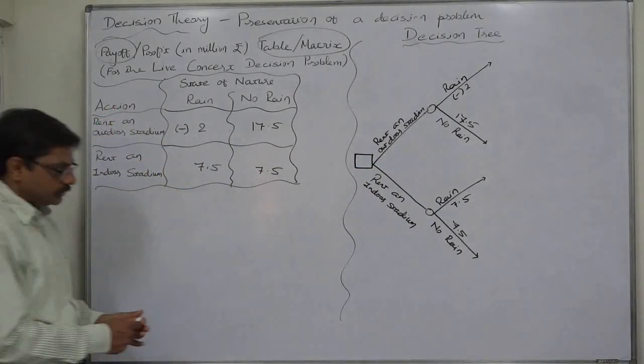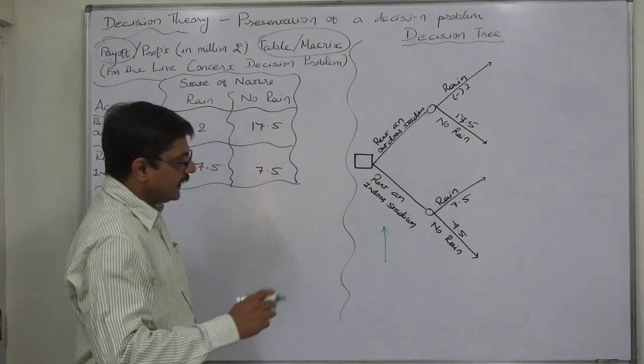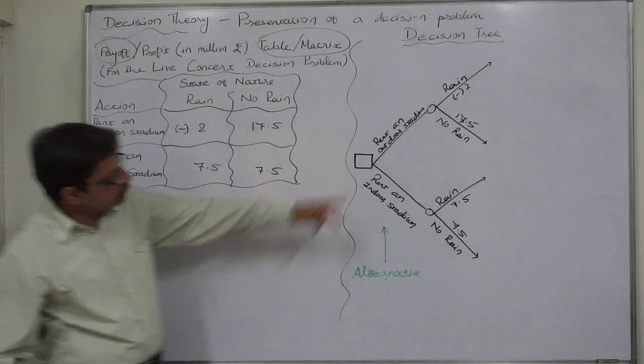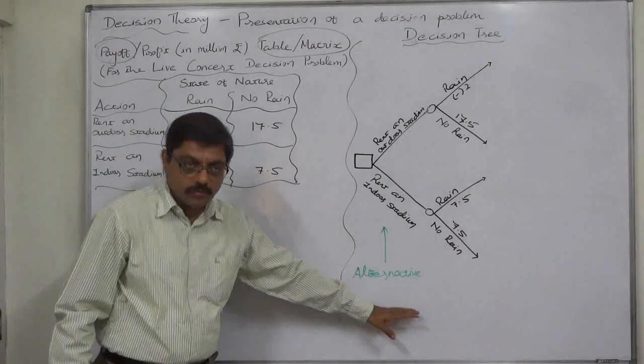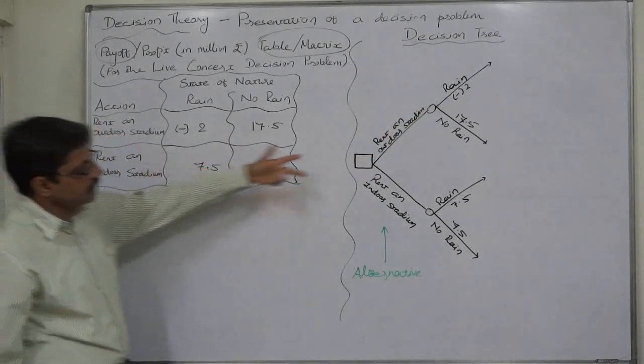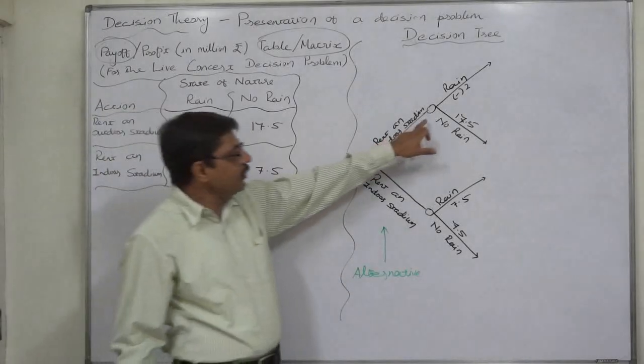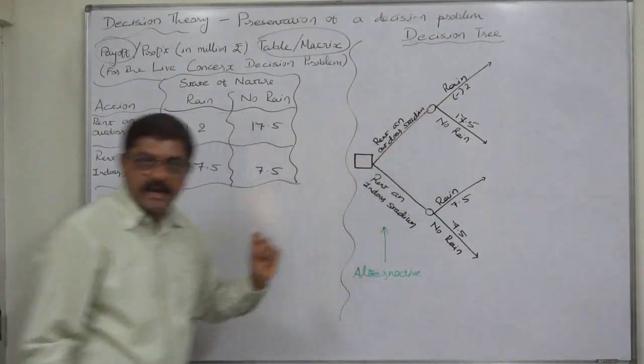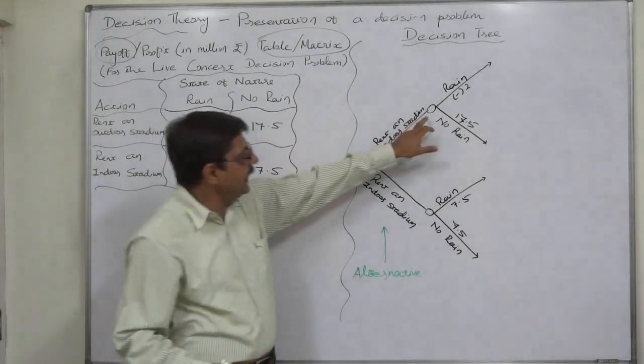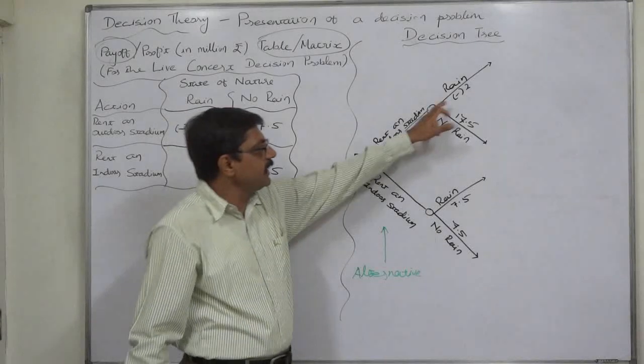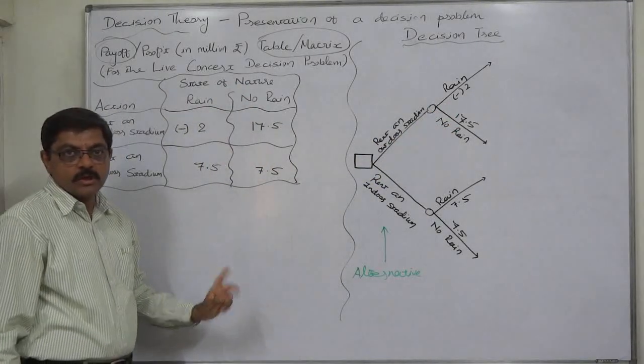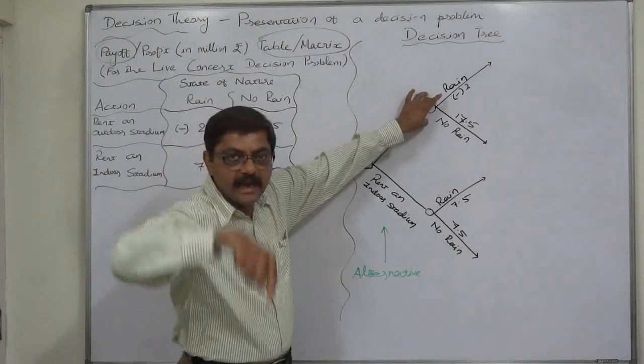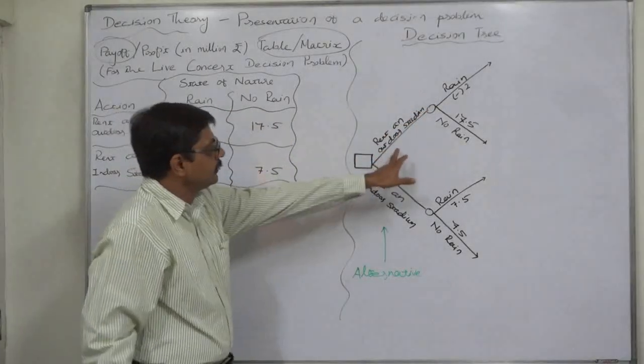So the starting point is the square node and from the square node the branches of alternatives are grown. There are two alternatives so there are only two branches. At the end of these alternative branches there are circular nodes and circular nodes actually have a two way role. They are endpoint of the alternative branches and starting point of the states of nature branches. So the states of all possible states of nature grow from the circular node at the end of the alternative branch.